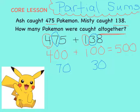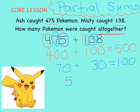And finally, let's look at the ones place in each number. The five just has a value of 5. And the eight has a value of 8. Five plus eight equals 13.